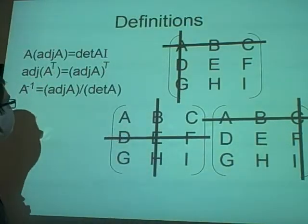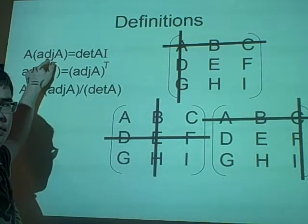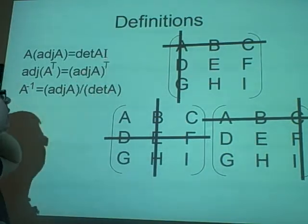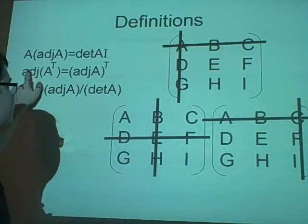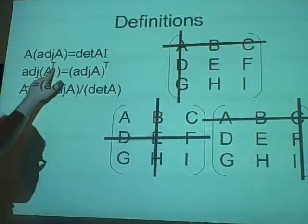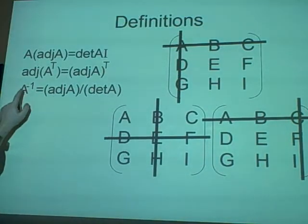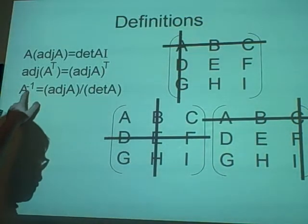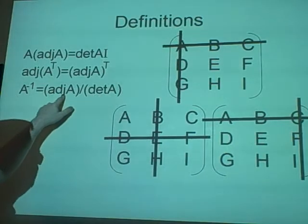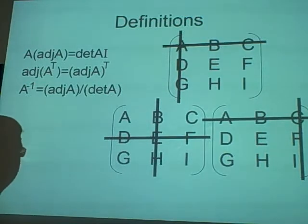The first property is that matrix A multiplied by the adjoint of A equals the determinant of A times the identity matrix. The next one is that the adjoint of A transposed equals the adjoint of A all transposed. The next one — I think I put this one in lecture 12 as well — is that A inverse equals the adjoint of A divided by the determinant of A. That's quite a useful one to know because the inverse can get a little bit messy.